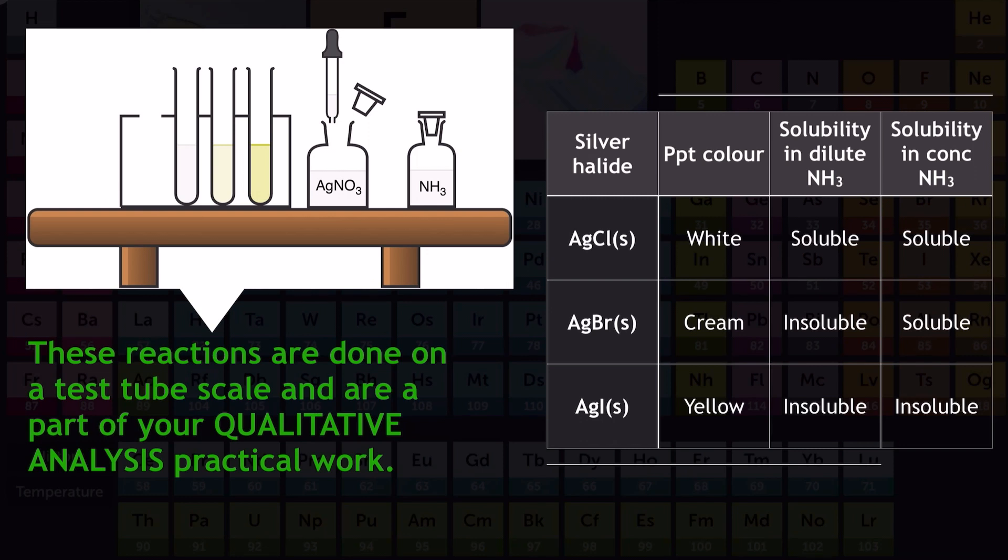What about AgBr? Well, it's a cream precipitate, and if you were to add dilute ammonia solution to it, not a lot would happen. In fact, nothing would happen at all. The precipitate would prevail, and it would stay in the test tube. If, however, you added concentrated ammonia solution to it, the precipitate would disappear, because the AgBr, that silver bromide precipitate, whilst being a cream precipitate in aqueous solution, is soluble in concentrated ammonia. What about the AgI, that silver iodide precipitate? Well, it's yellow in color, and it's completely insoluble in either dilute or concentrated ammonia. So it's definitely not going anywhere. As you can see from the final two columns in this table, we can use different concentrations of ammonia solution to help further distinguish between the different halide ions using this silver nitrate test once we've got the precipitates.